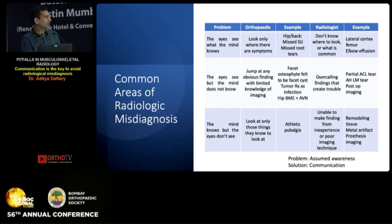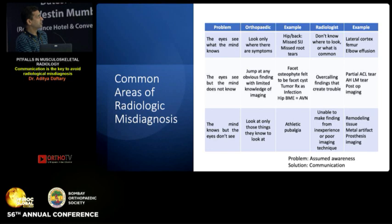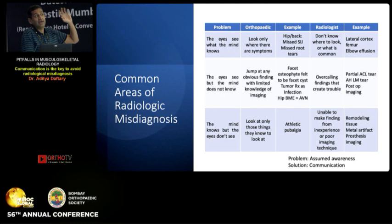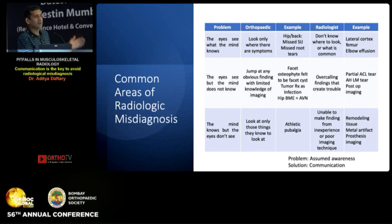Looking at common areas of radiologic misdiagnosis: the 'eyes see what the mind knows' — in an orthopedic surgeon situation, you'd only look where there are symptoms, so you'd miss a sacroiliac joint condition or a root meniscal tear because you don't know how to look for it. For a radiologist, we get an image with no context, no awareness of where to look, and we'd miss fractures on that basis. 'Eyes see but mind doesn't know' — we jump at an obvious finding: a facet osteophyte is called a facet cyst, tumor mistaken as infection, bone marrow edema called AVN. We can over-call findings — partial tears called CL tears, anterior and lateral meniscal tears, and we mess up with post-operative imaging.